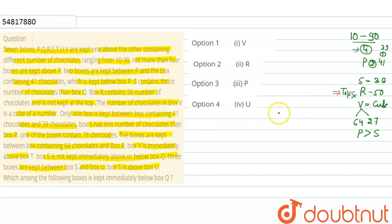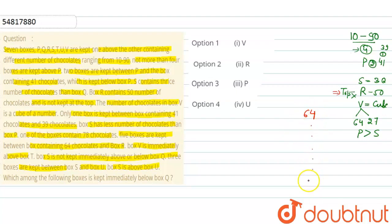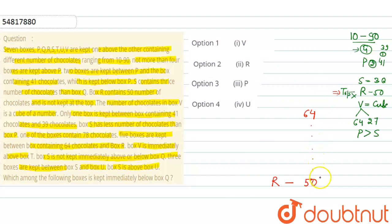Let's start with the most definitive condition: 5 boxes are kept between the box containing 64 chocolates and box R. Since box R is not at the top, we can place the 64-chocolate box at the top and R at the bottom, with 5 boxes in between — that gives us all 7 positions: 1, 2, 3, 4, 5, 6, and 7.